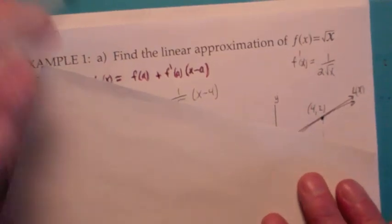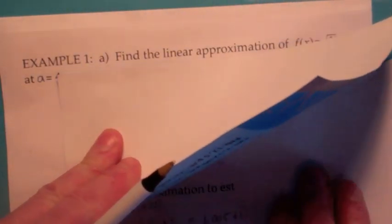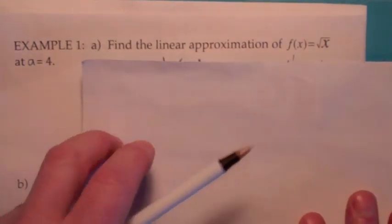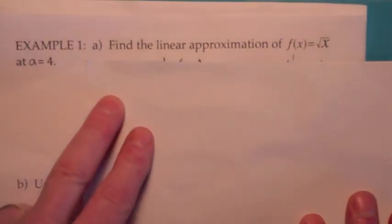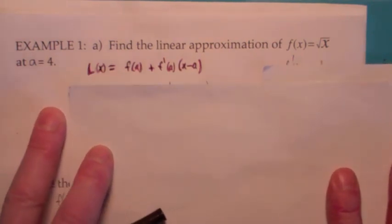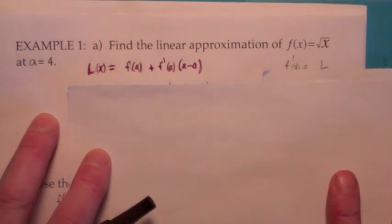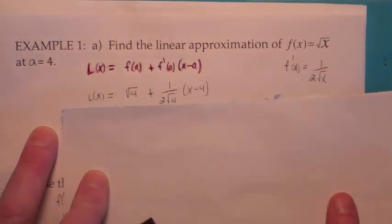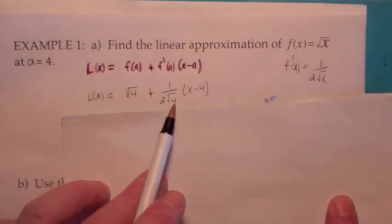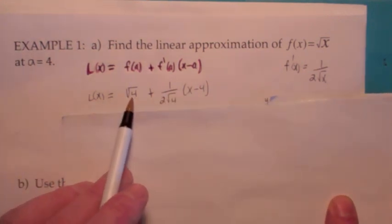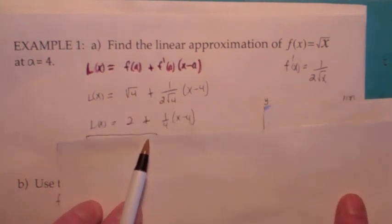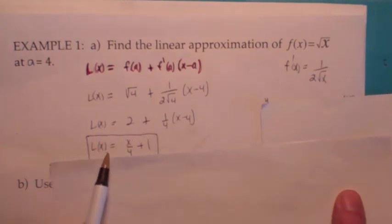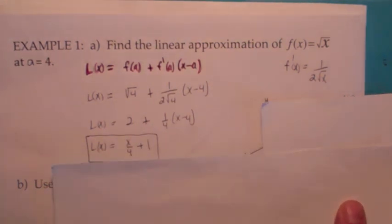Find the linear approximation to f of x equals square root of x near a equals 4. Using the formula for L of x, you compute the derivative first and plug in a equals 4. The derivative at 4 becomes 1 over 2 times square root of 4. And f of a is f of 4, which is the square root of 4. When you simplify, this becomes 2 and this becomes 1 fourth. So L of x equals x over 4 plus 1. It's just the equation of the tangent line.